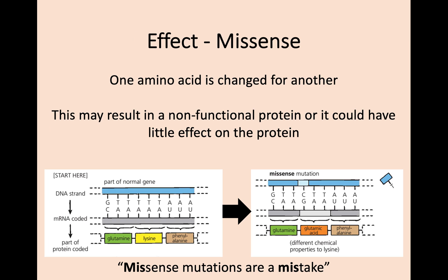So you might remember the missense mutation from when we had substitution — one amino acid is changed for another, and this can result in a non-functional protein or it might have very little effect on the protein at all. One good way to remember this is: missense mutations are a mistake. There's been a mistake in that amino acid. It may result in a non-functional protein or it might have little effect.